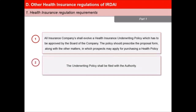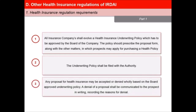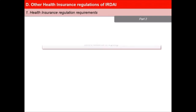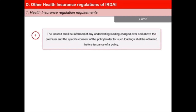Second, the underwriting policy shall be filed with the authority. Third, any proposal for health insurance may be accepted or denied wholly on the basis of the board's approved underwriting policy. A denial of a proposal shall be communicated to the prospect in writing and also the reasons for denial. Fourth, the insured shall be informed of any underwriting loading which is charged over and above the premium. Also, the specific consent of the policyholder for such loadings shall be obtained before issuance of a policy.